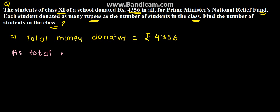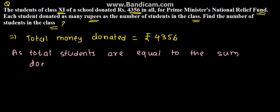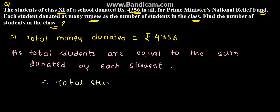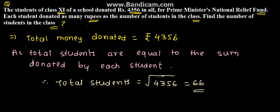The condition is that total students are equal to the sum donated by each student. Therefore, total students will be equal to the square root of four thousand three hundred and fifty six. The square root of 4356 is 66. Therefore, the number of students in the class is 66, and each of them donated sixty six rupees to the Prime Minister's Relief Fund, which is the solution for the given problem.